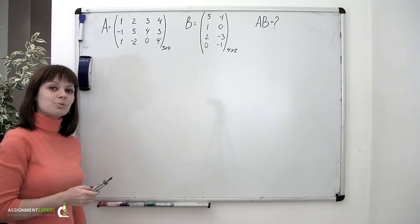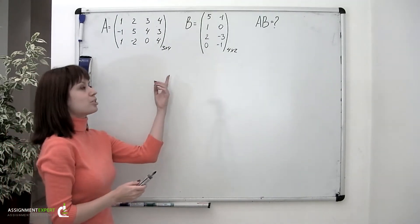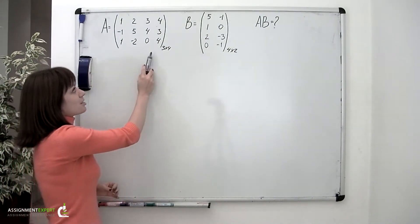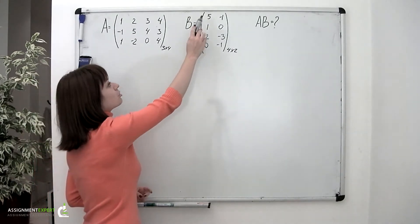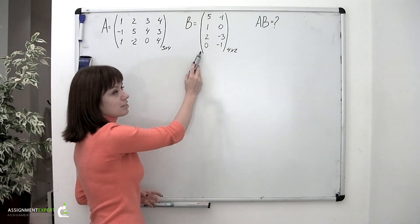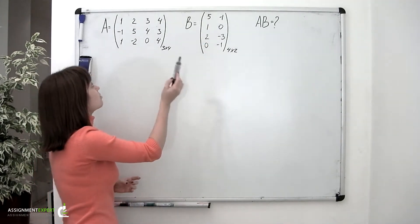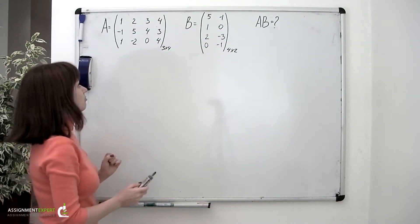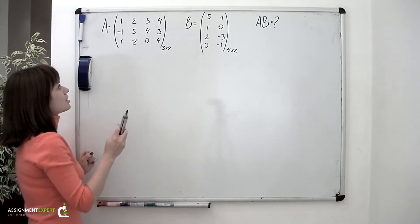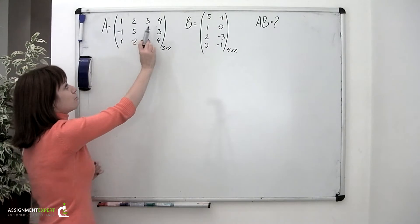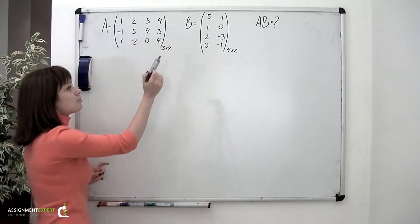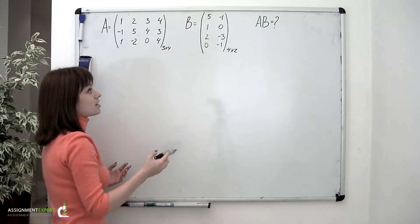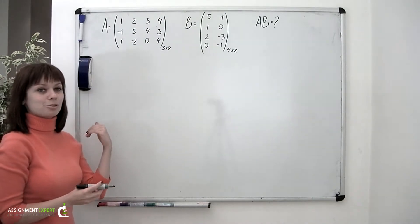The first thing we need to do when multiplying two matrices is to check if the number of columns of the first matrix being multiplied matches the number of rows of the second matrix. Otherwise, the product of two matrices isn't defined. Matrix A has 4 columns, matrix B has 4 rows — everything seems fine and the product can be found.